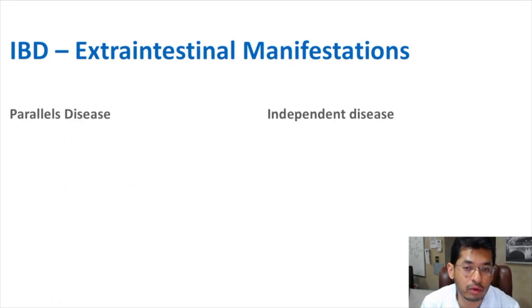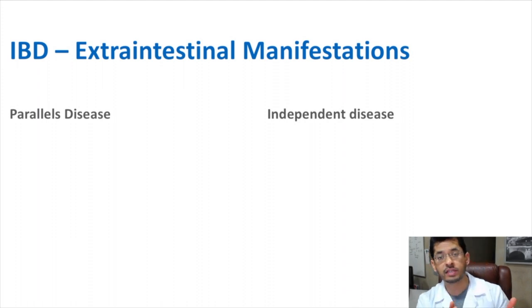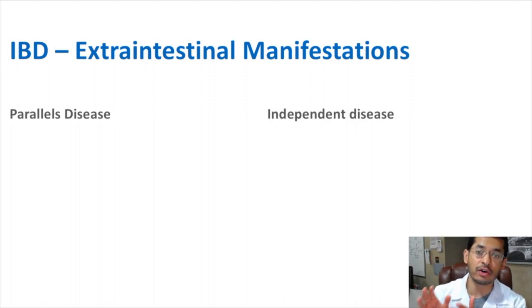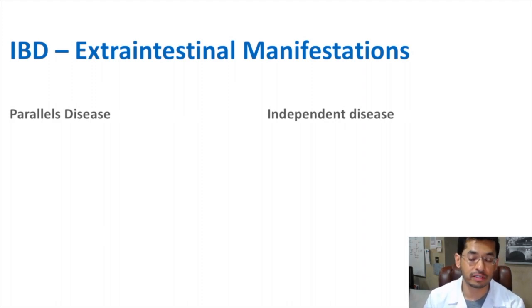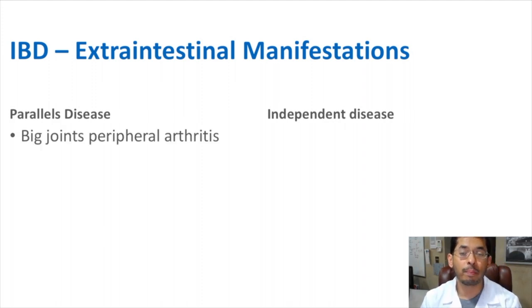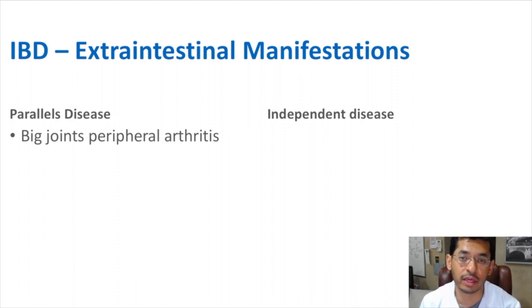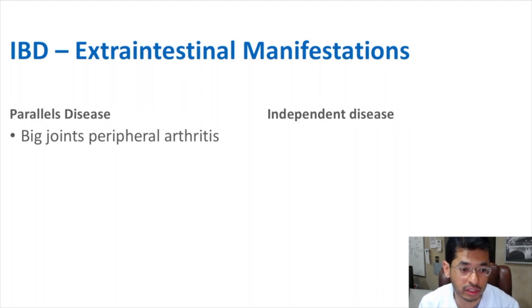There are two main groups when we think of extra intestinal manifestations of IBD: those that parallel the disease, and those that don't. When you have flares of your UC or Crohn's, you have flares of these parallel extra GI manifestations. Big joint peripheral arthritis tends to parallel the disease course. When you have a lot of joint pain in your hands, knees, elbows, or hips, that could be a sign of a flare — an indication that something could be getting worse and you may need further escalation of therapy.